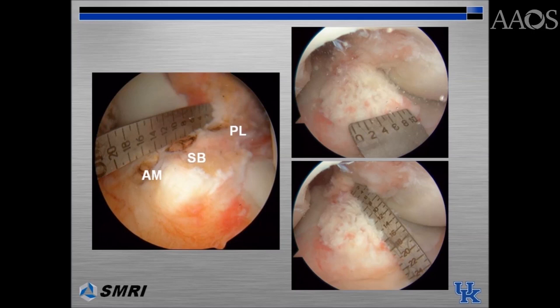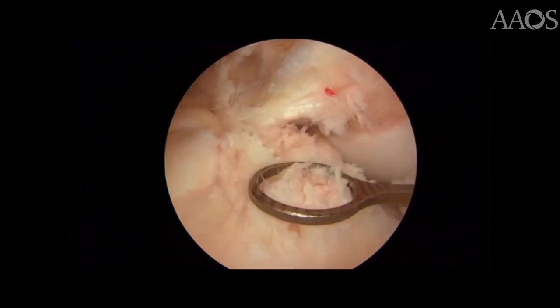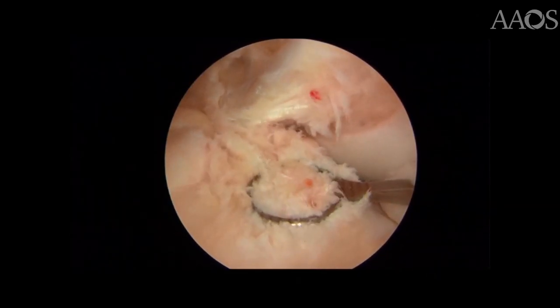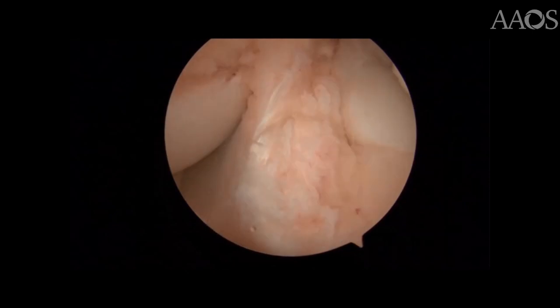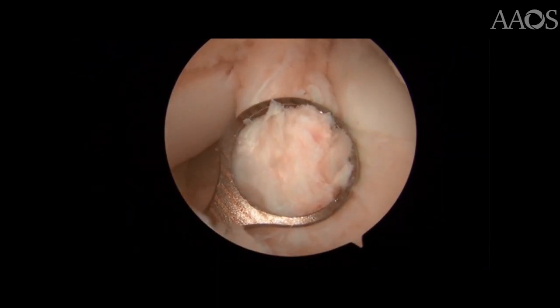The tibial tunnel locations for anatomic single bundle and double bundle techniques are shown. The anatomic tibial ACL footprint is in line with the anterior horn of the lateral meniscus and adjacent to the medial articular cartilage. As the native ACL tibial footprint is preserved, a tibial guide can be placed in the center in order to achieve an anatomic tibial tunnel.